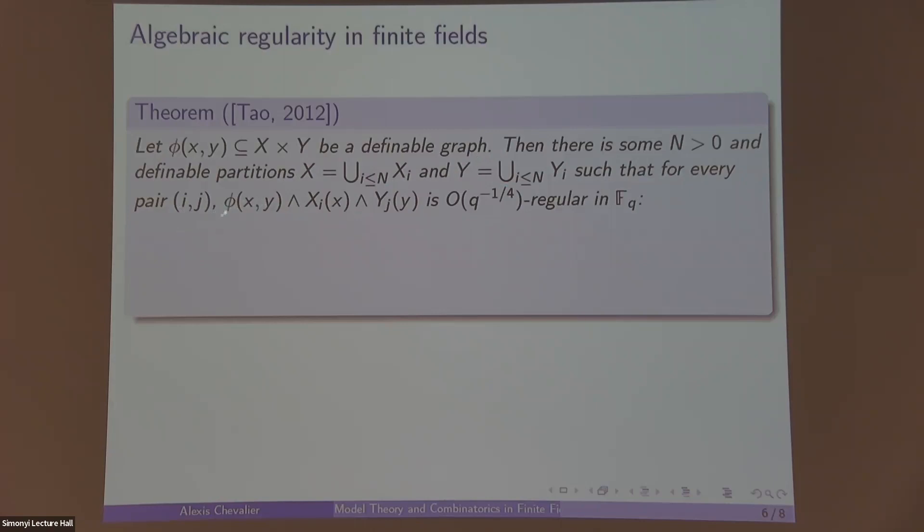the induced subgraph of φ restricted to the X_i and Y_j is approximately regular in the sense of Szemerédi. If you've never seen the definition, maybe it's a lot to take in. Before that, I'll just point out: in the classical Szemerédi regularity lemma, we don't have for every pair (i,j). We only know that for most pairs (i,j) we have regularity, and the error bounds on regularity with the classical Szemerédi are nowhere near as good as this. So this is a very strong form.